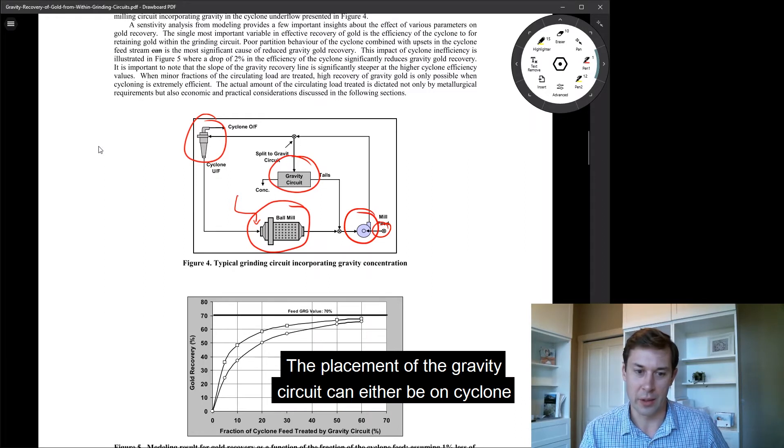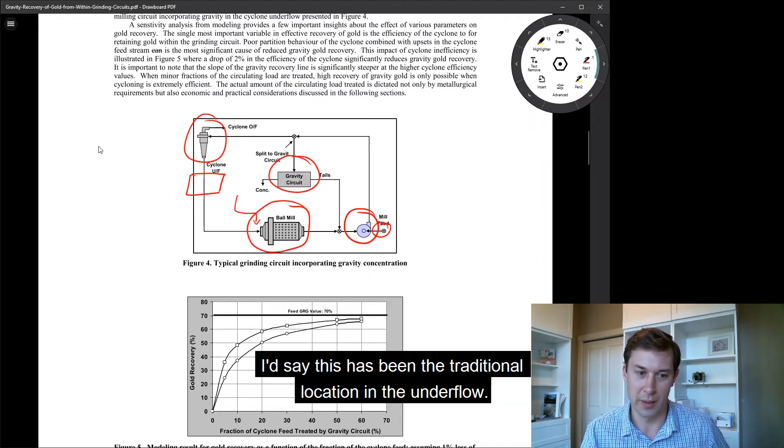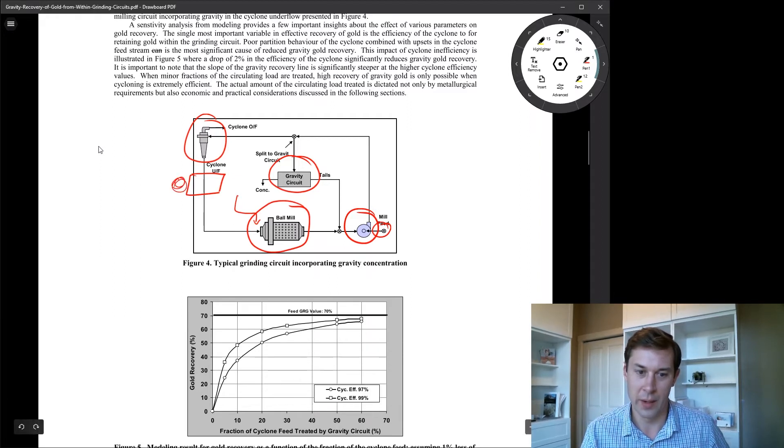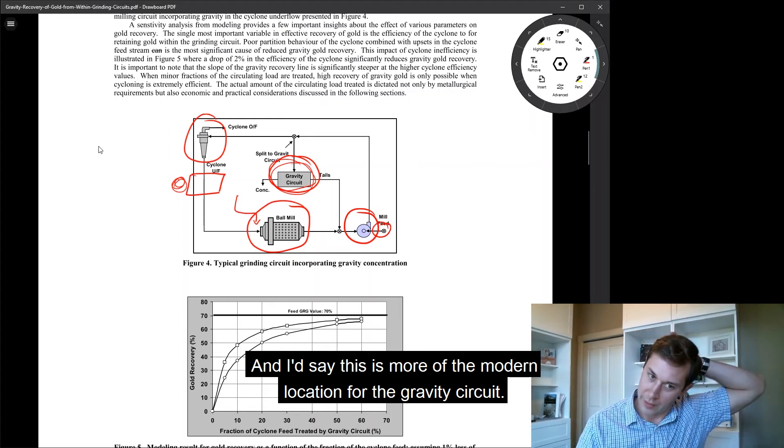The placement of the gravity circuit can either be on cyclone feed or here on cyclone underflow. I'd say this has been the traditional location in the underflow, and I'd say this is more of the modern location for the gravity circuit.